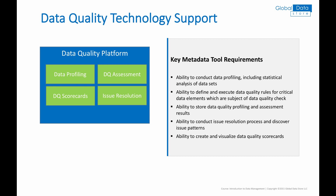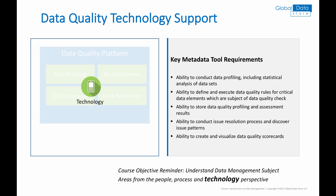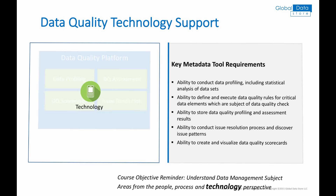Same as metadata management, data quality management capability requires technology tools to support the data quality process. Data quality tools should have a certain set of features in order to support the data quality process effectively. Key features include: 1. Ability to conduct data profiling, including statistical analysis of datasets. 2. Ability to define and execute data quality rules for critical data elements. 3. Ability to store data quality profiling and assessment results. 4. Ability to conduct issue resolution process and discover issue patterns. 5. Ability to create and visualize data quality scorecards. This slide refers to the technology perspective of data quality capability.